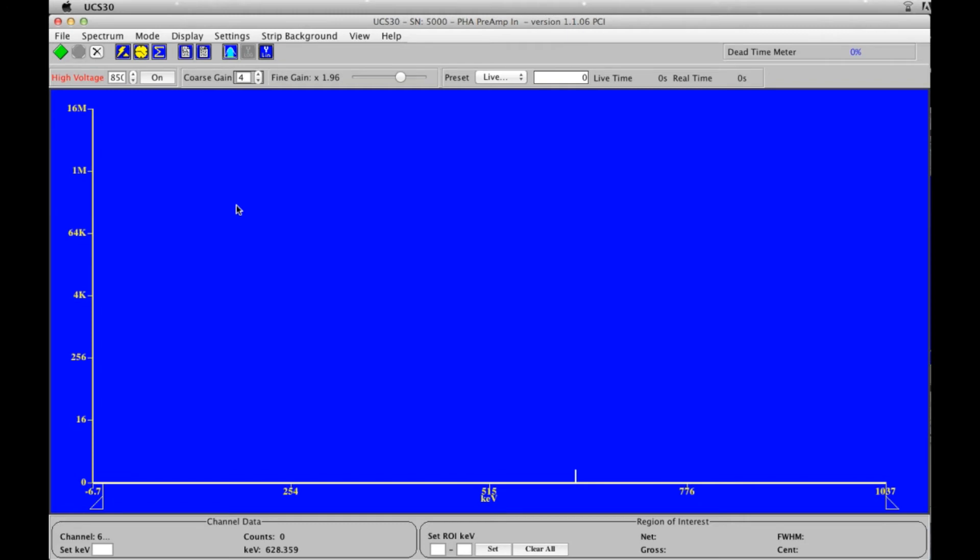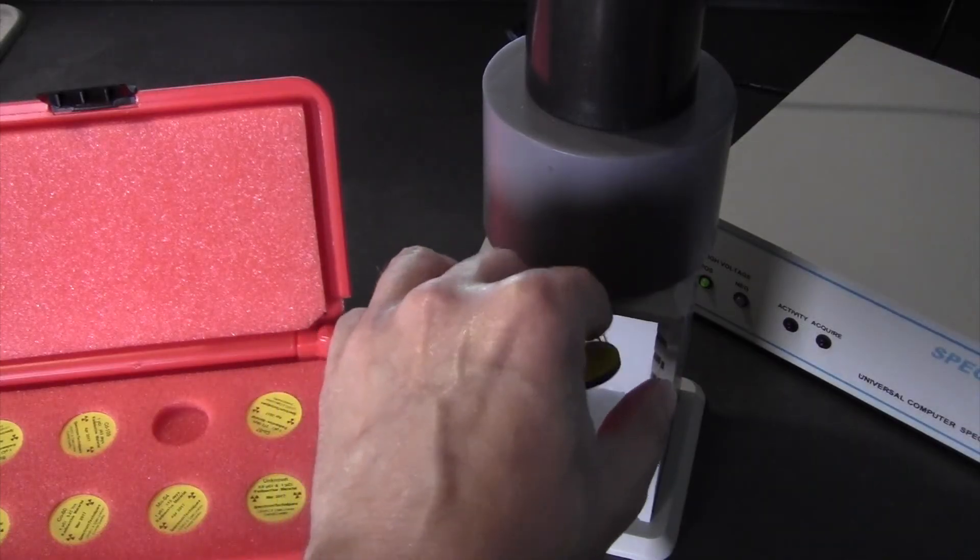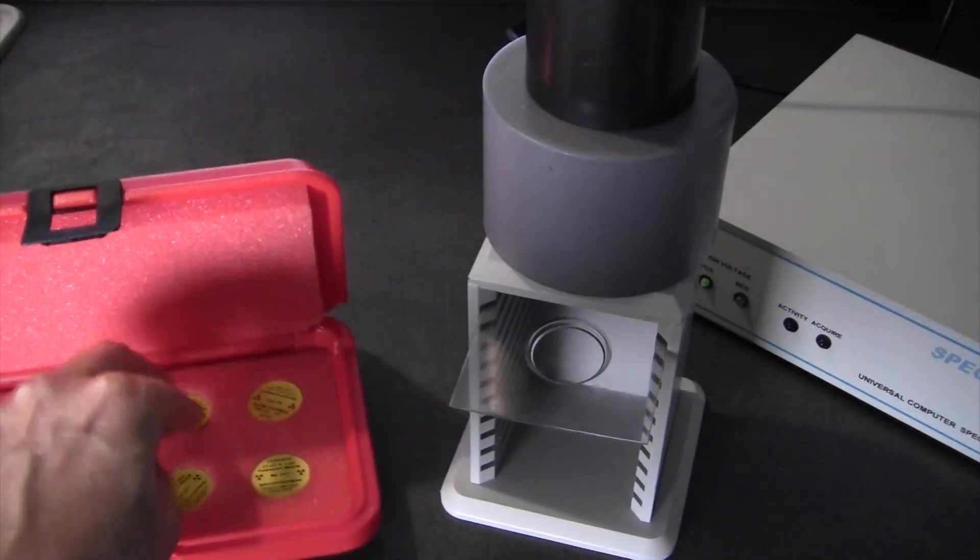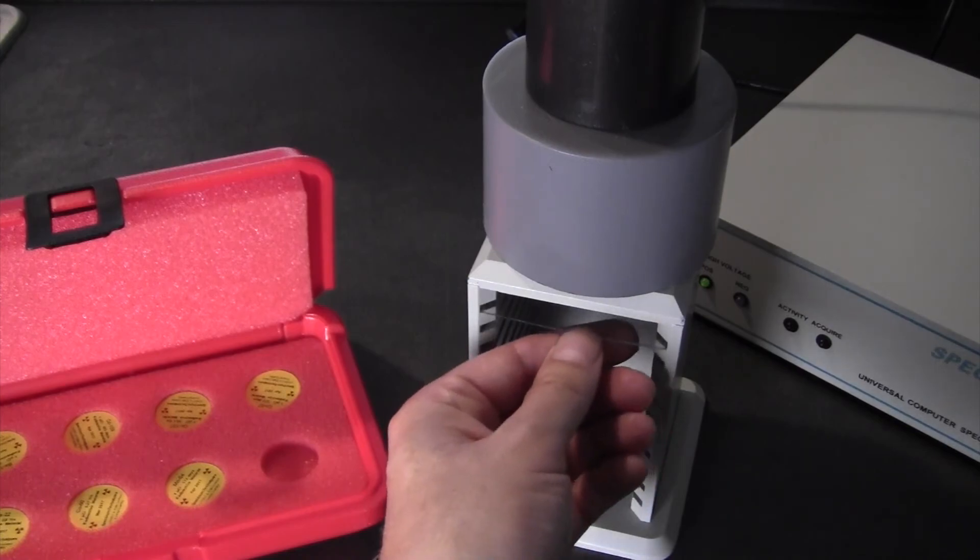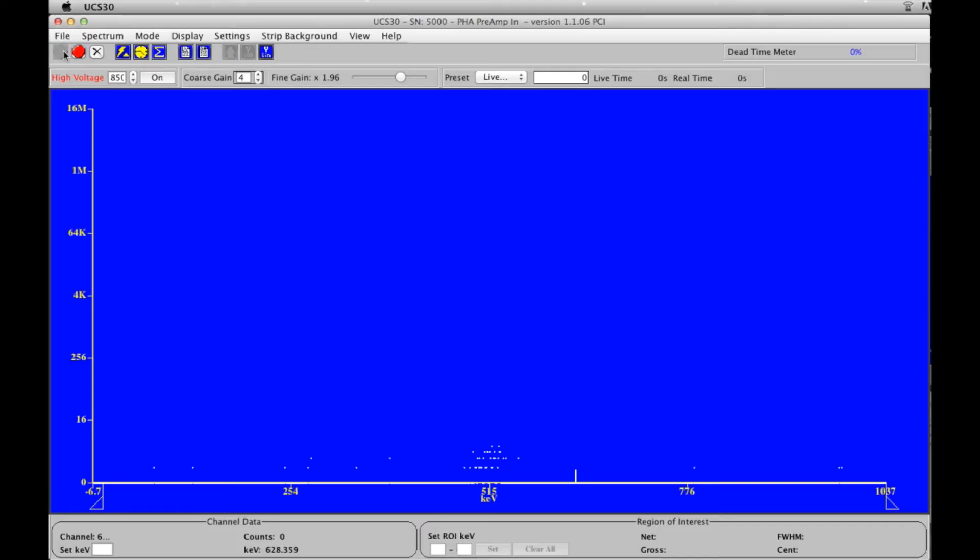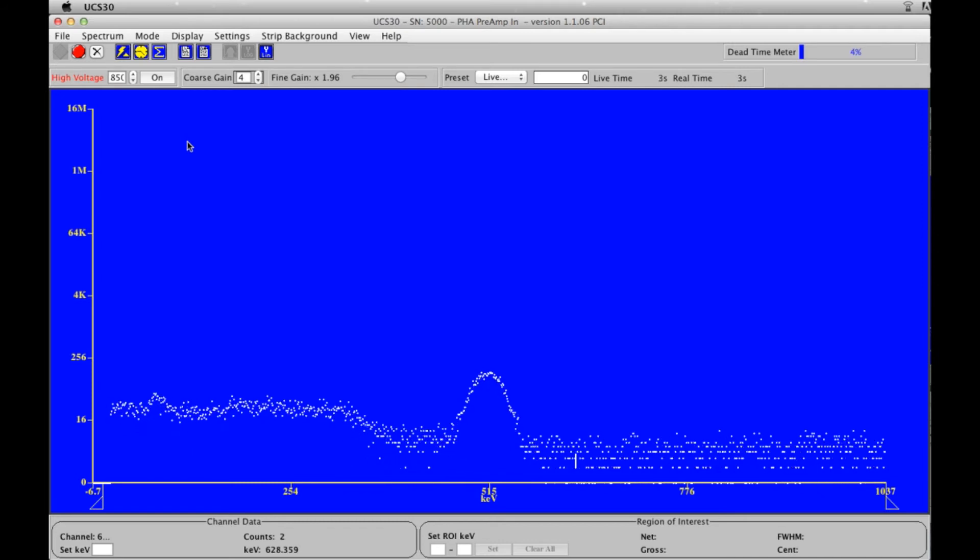What we will do now is check out the isotope that is unknown to you and try to figure out what it is using the ISO match feature. First, we will press go, start the counting, and we can see the peaks appearing quite quickly.